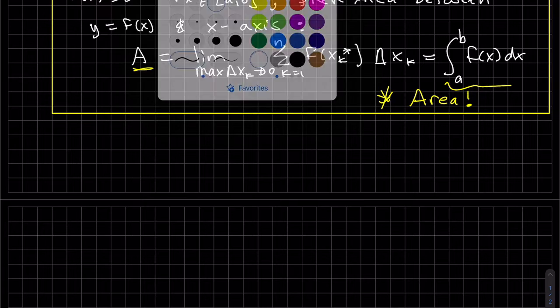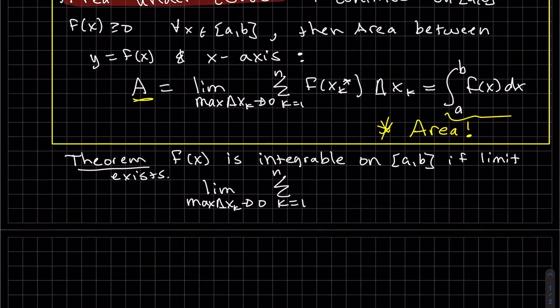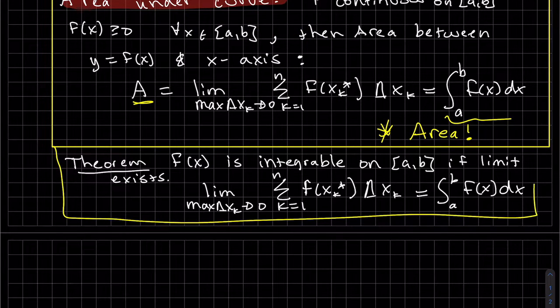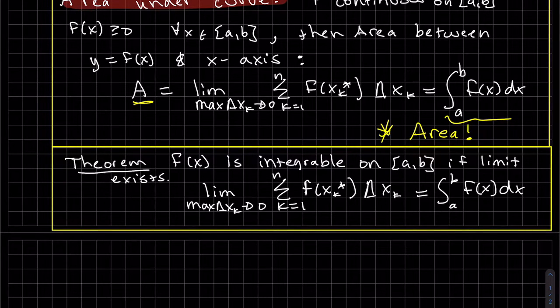There's another theorem that's very close to this. In the top one, f is continuous and the function's greater than zero, and that's the area under the curve—the actual area. Here we just have f(x) is integrable from a to b. These are the same, but this is net area. We don't have the condition that the function is greater than zero, so it's the net area.